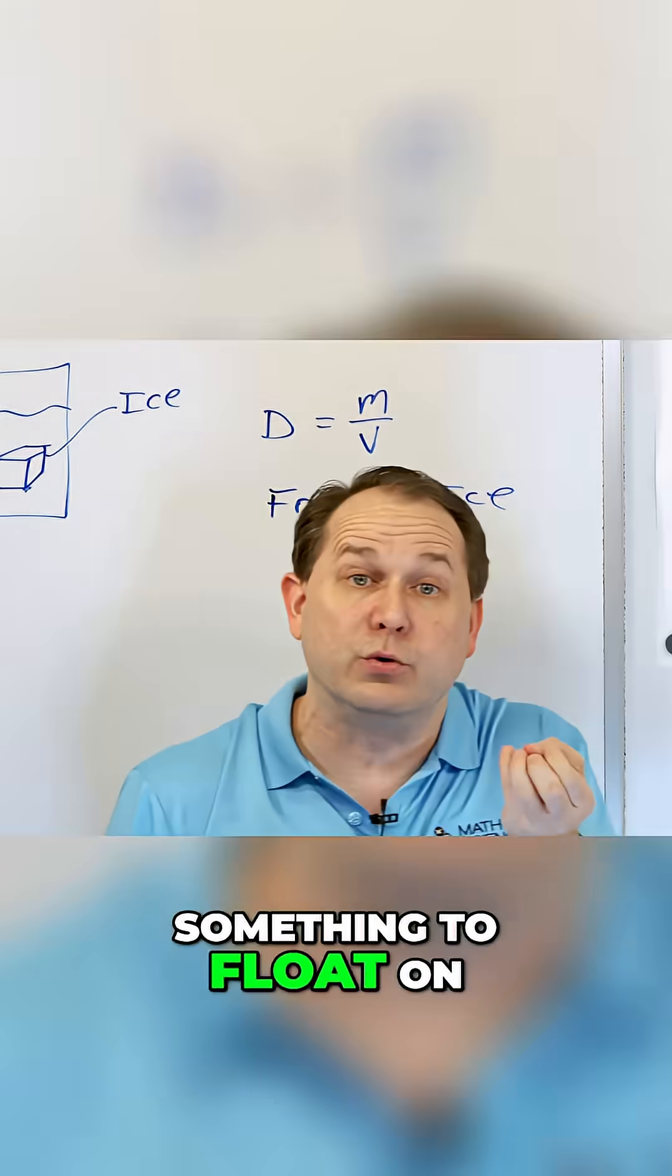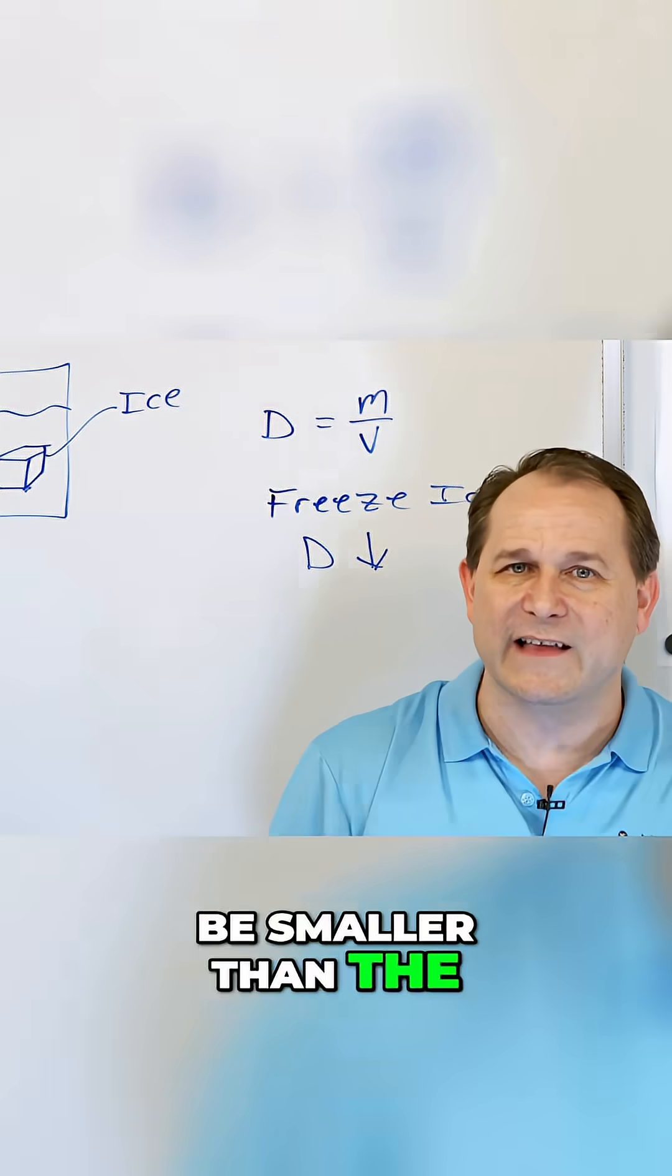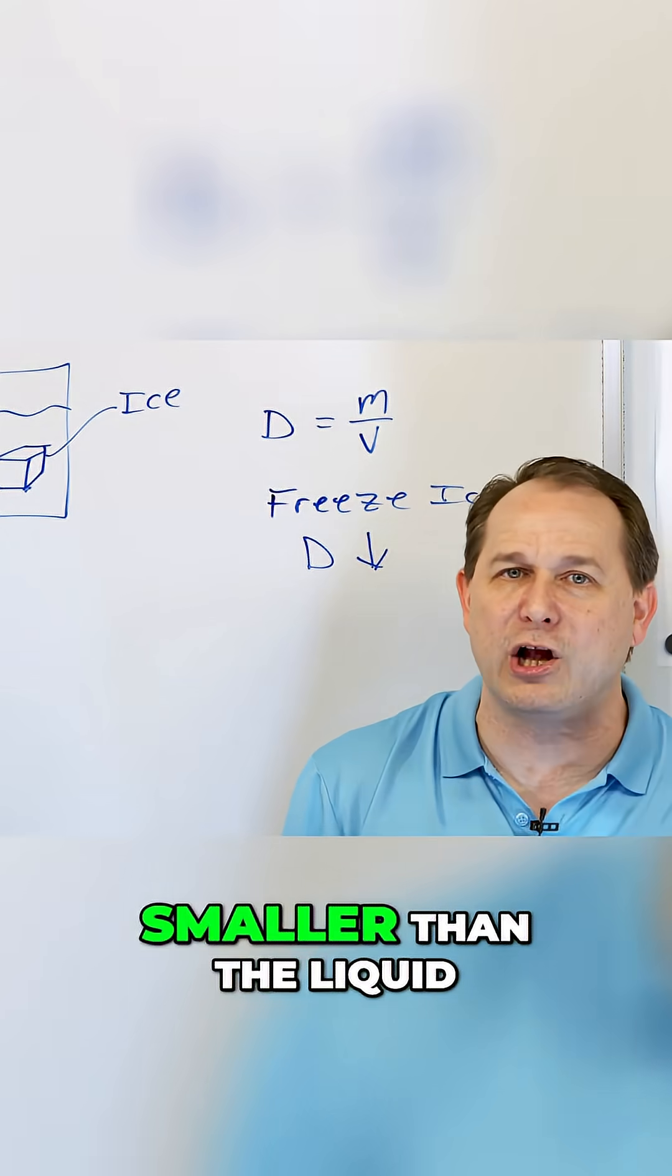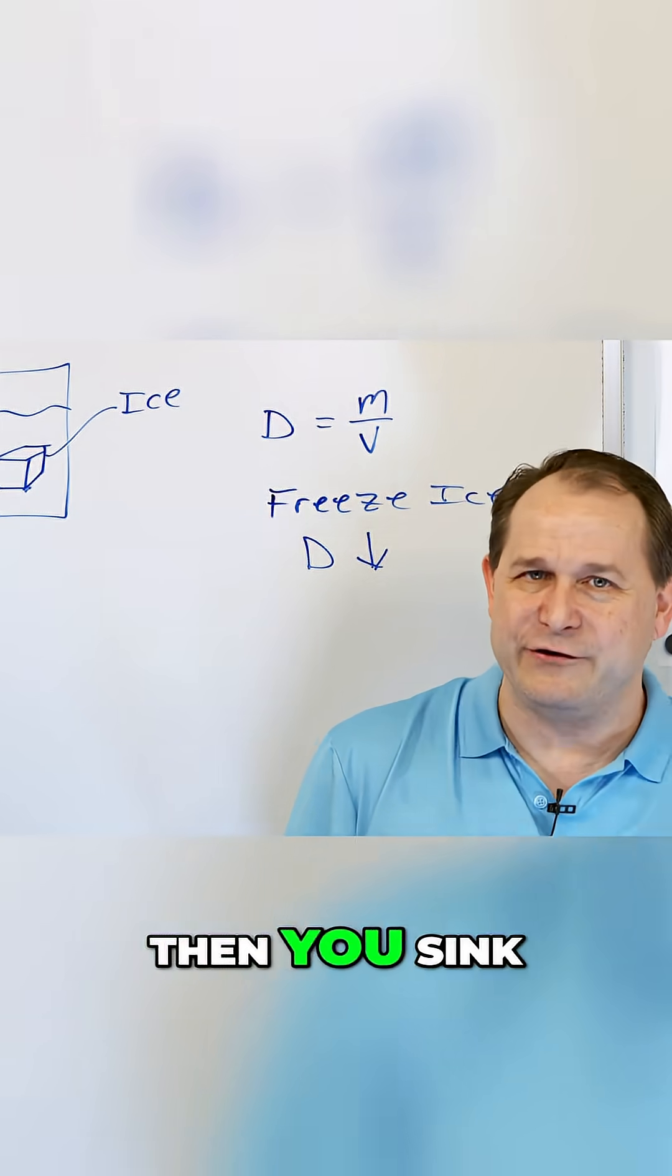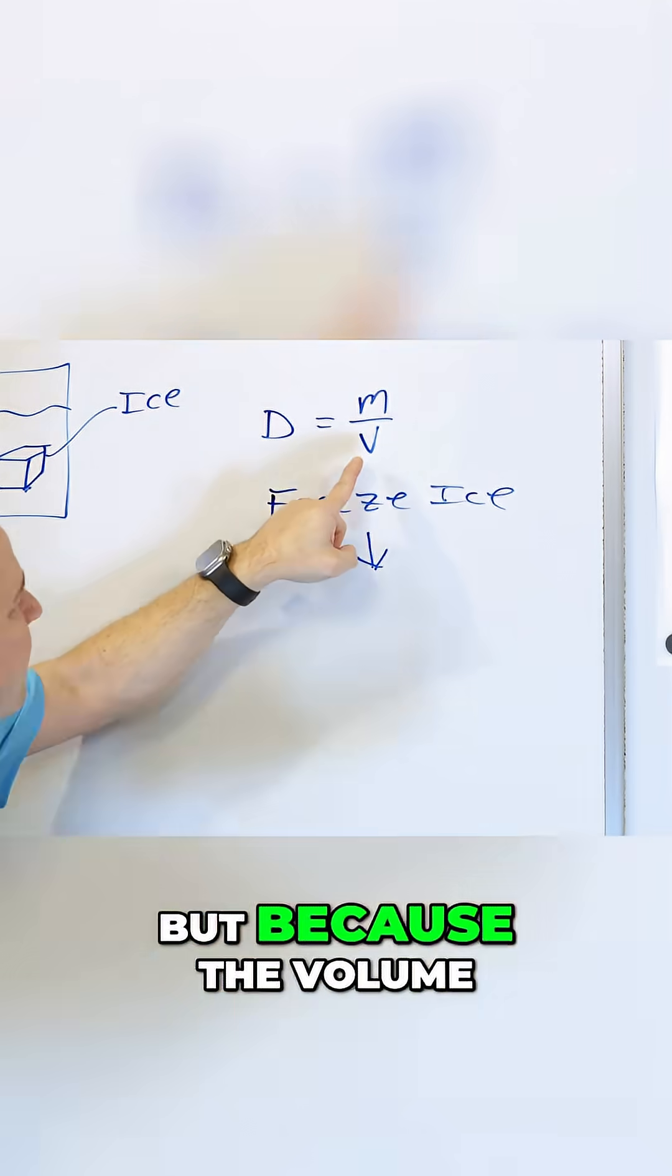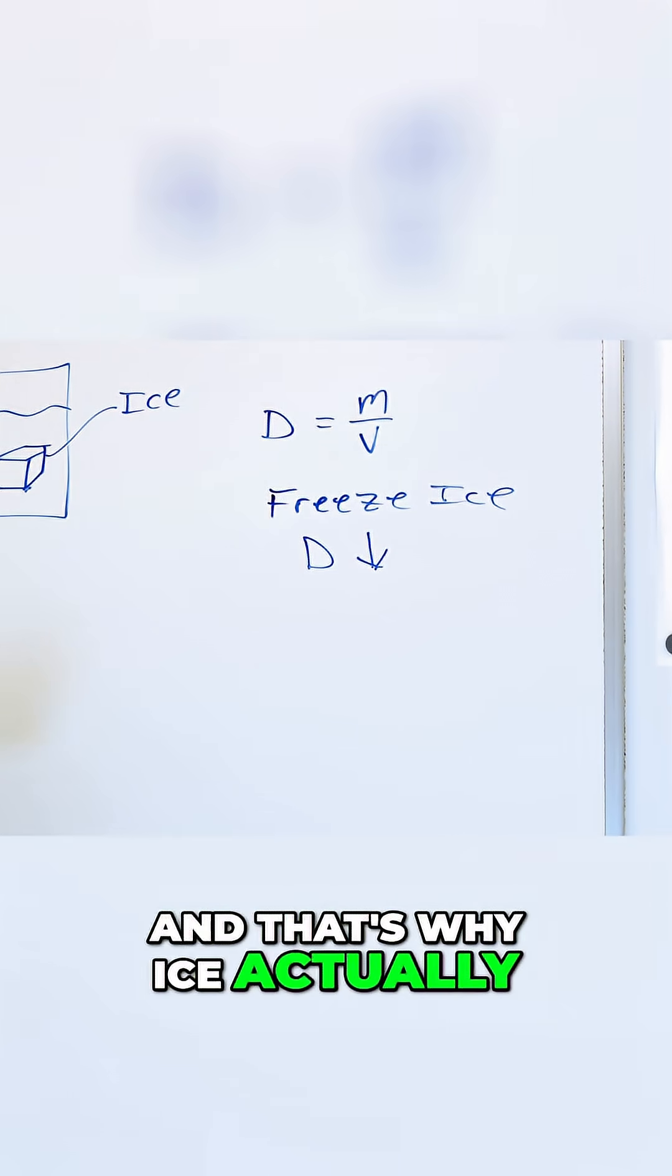In order for something to float on a liquid, its density has to be smaller than the liquid you're floating in. When the density is smaller than the liquid you're floating in, then you float. If the density is bigger, then you sink. But because the volume gets bigger, the density gets smaller, and that's why ice actually floats to the surface.